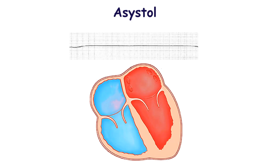In the case of asystole, there is no electrical activity of the cardiomyocytes. ECG reveals the flat line, also called the isoline. In the case of true asystole, the ventricles neither contract nor fibrillate.